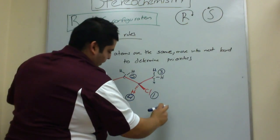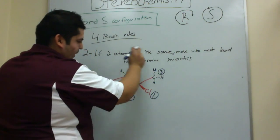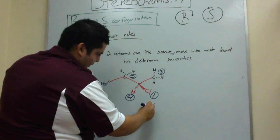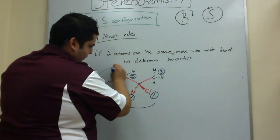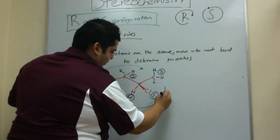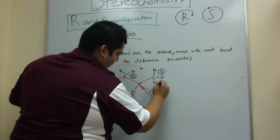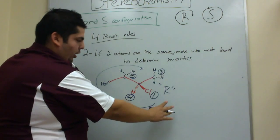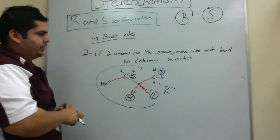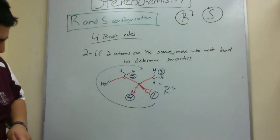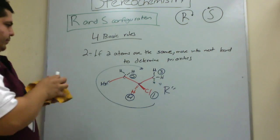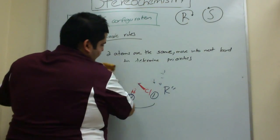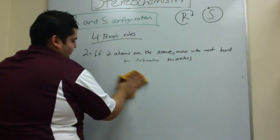We do the configuration again and find out that this is R — this molecule has the R configuration. That's rule number two.